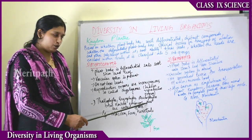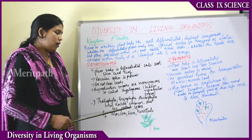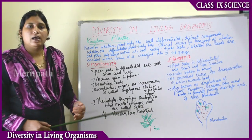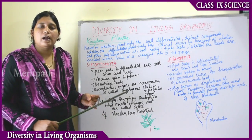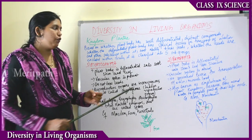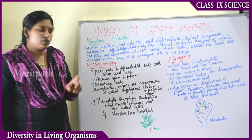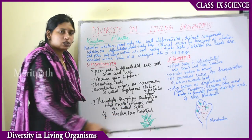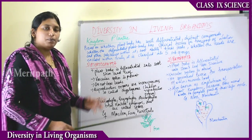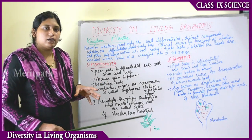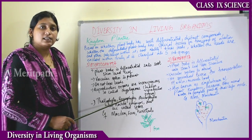Thallophytes, Bryophytes, and Pteridophytes bear naked embryos called spores. With the help of spores, these first three subgroups of Plantae reproduce. Thallophyta, Bryophyta, and Pteridophyta have naked embryo-like spore structures. They do not have proper distinct reproductive organs — they have hidden reproductive organs — which is why they are known as cryptogams.